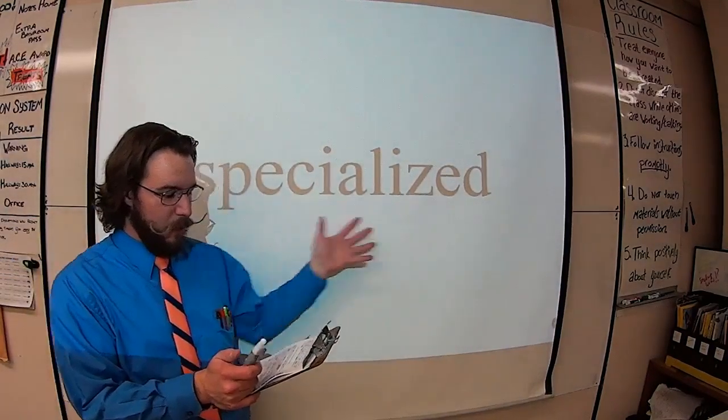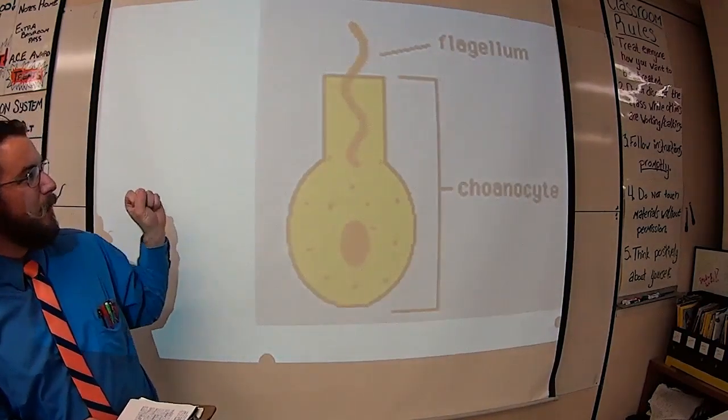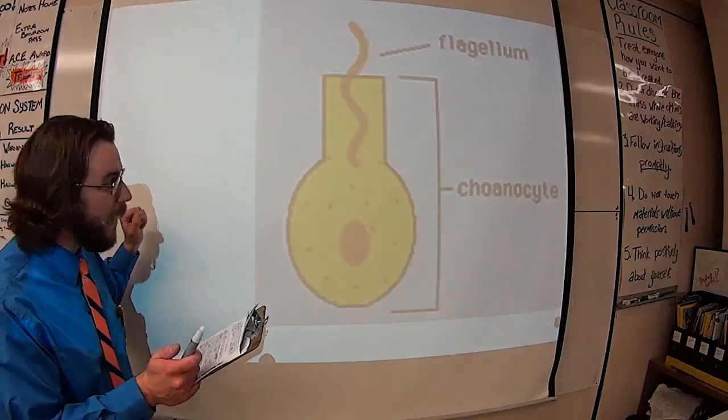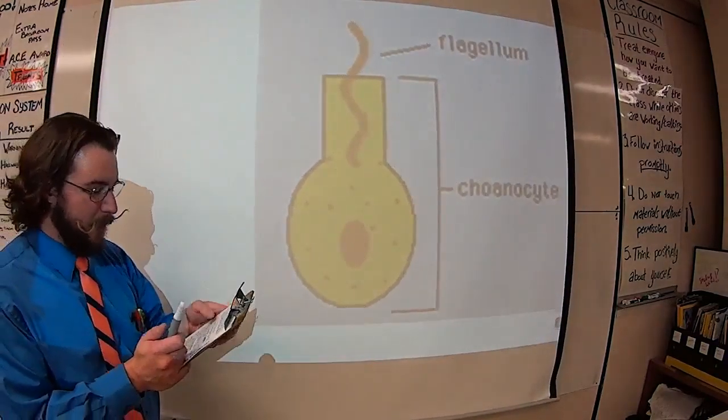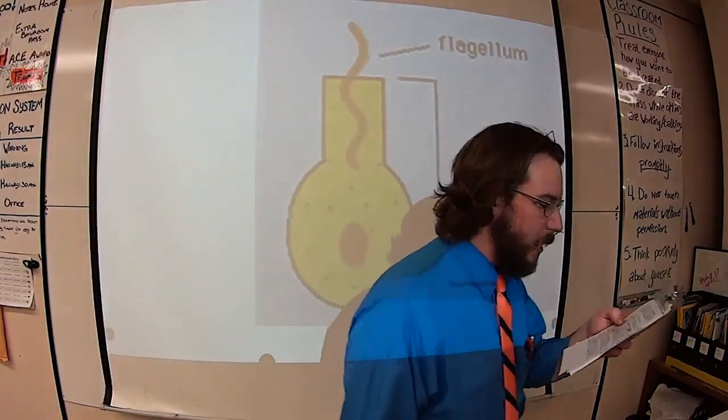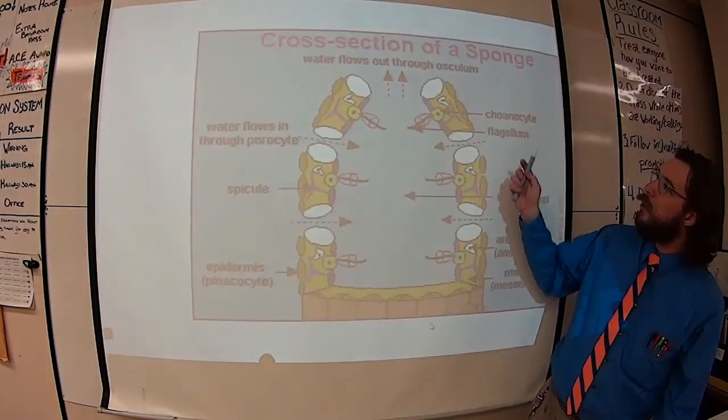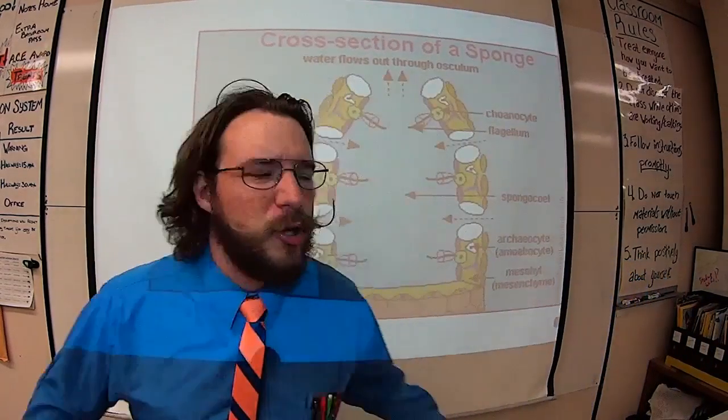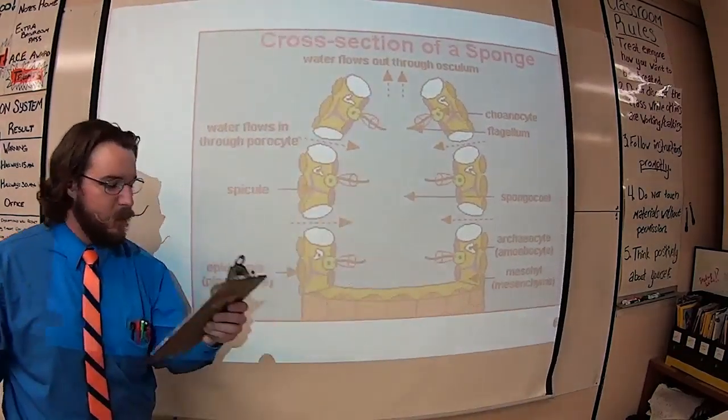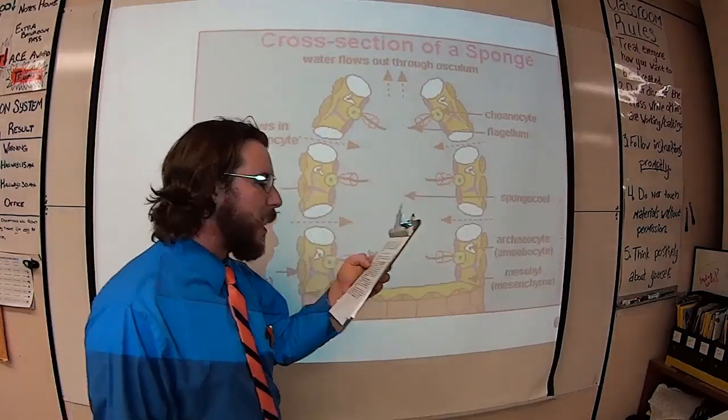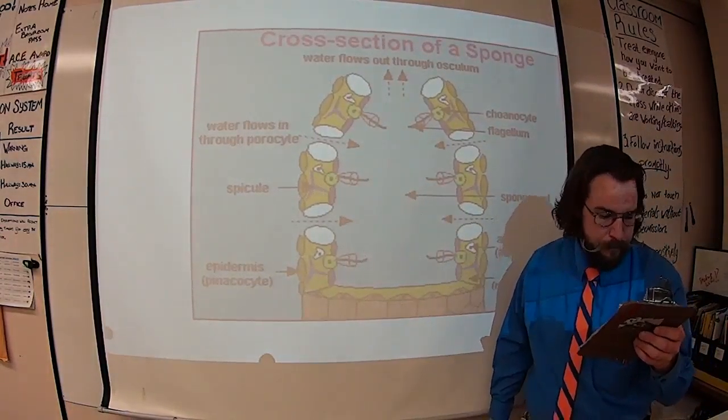They're different from each other. So inside, they have specialized cells called choanocytes. This is a picture of a choanocyte. They have flagella at the top. Yes, they have the tail over the top. These flagella pull water into the spongocoel cavity. Real life Patterson, just put it over top of the video. They don't need to look at me.